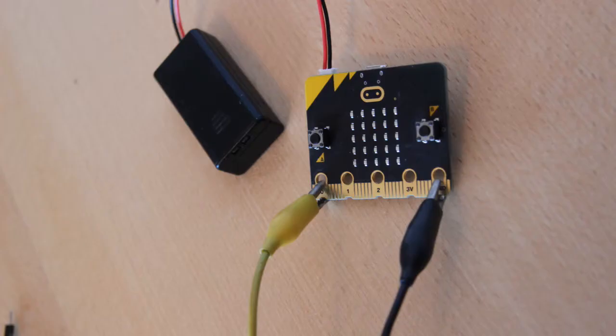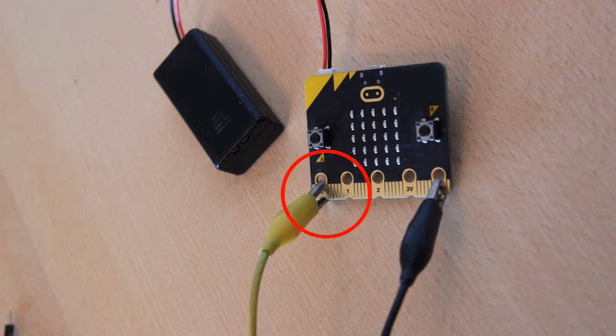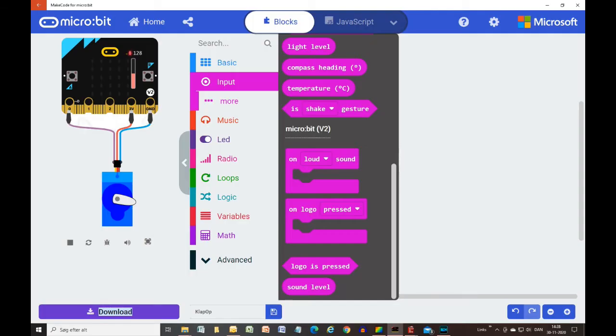The connector at microbit version 2 has got a notched edge which makes it easier to connect the test cords. In make code for version 2, some sections have been added.